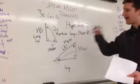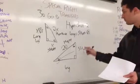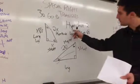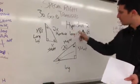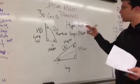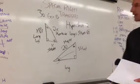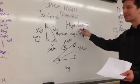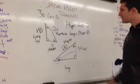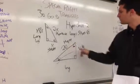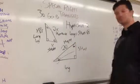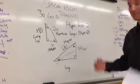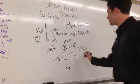Alright, so hypotenuse is 20. If my hypotenuse is 20, I can figure out what my short leg is, right? My hypotenuse equals something times 2. So if I've got my hypotenuse, I want my short leg — all I've got to do is divide by 2. So this is 10.